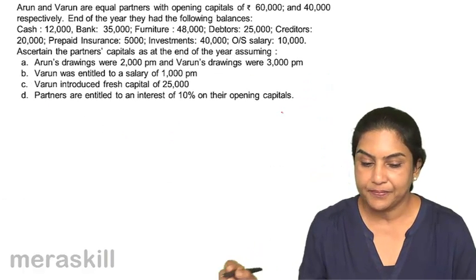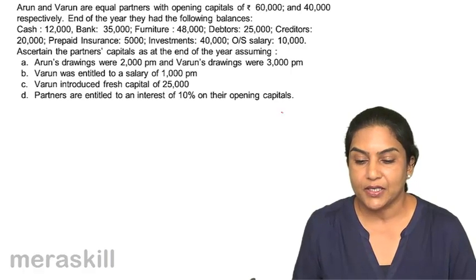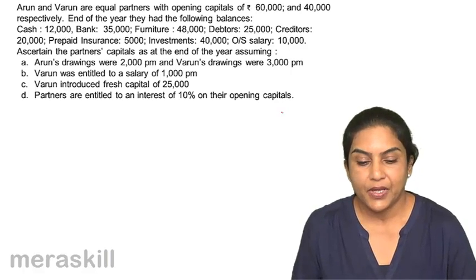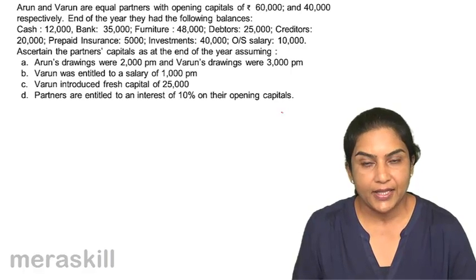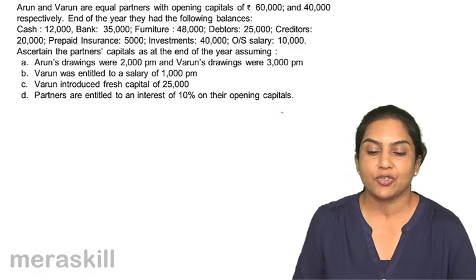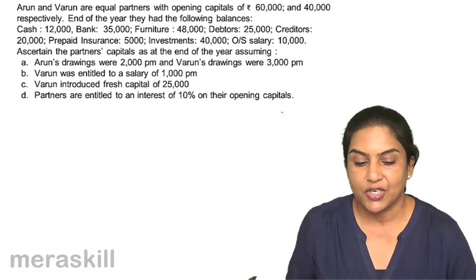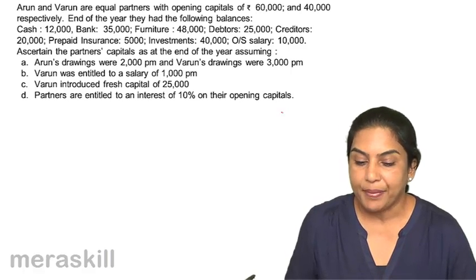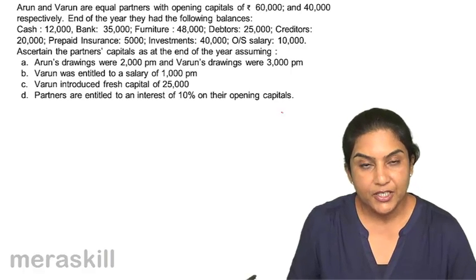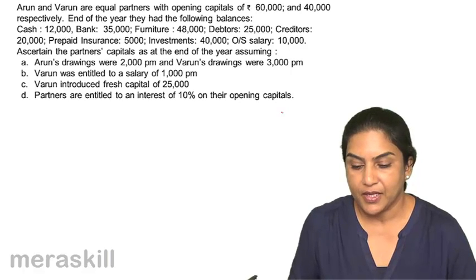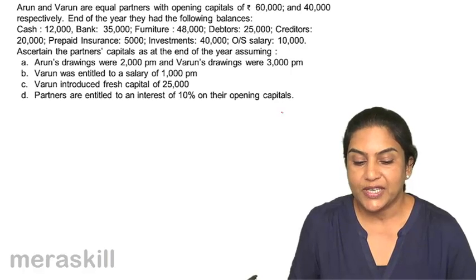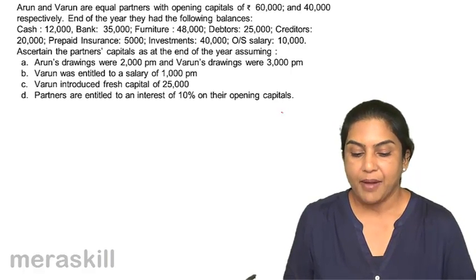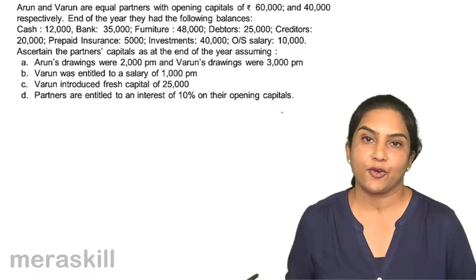Let us consider an example. Arun and Varun are equal partners with opening capitals of 60,000 and 40,000 respectively. At the end of the year, they had the following balances: cash 12,000, bank 35,000, furniture 48,000, debtors 25,000, creditors 20,000, prepaid insurance 5,000, investments 40,000, and outstanding salary 10,000. Ascertain the partners' capitals as at the end of the year, assuming Arun's drawings were 2,000 per month and Varun's drawings were 3,000 per month. Varun was entitled to a salary of 1,000 per month. Varun introduced fresh capital of 25,000 and partners are entitled to interest of 10% on their opening capitals.